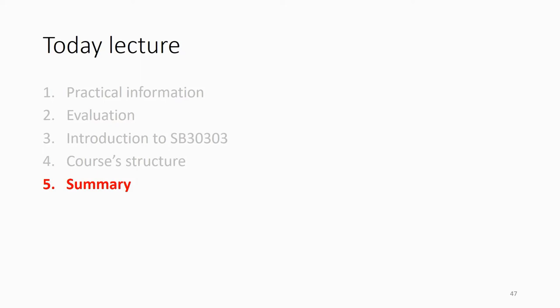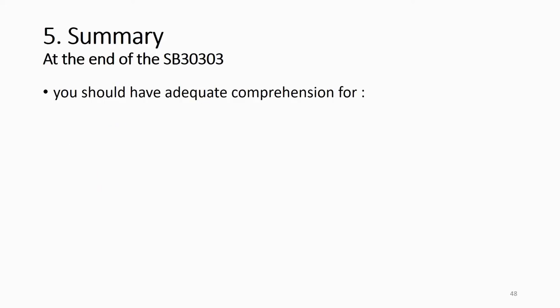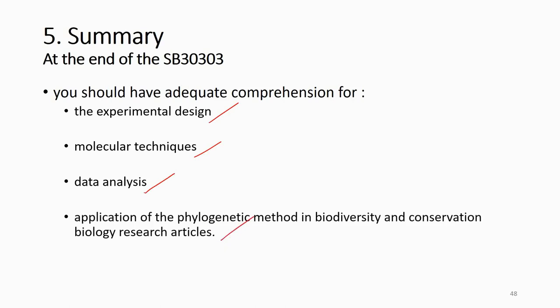To summarize, at the end of the course you should have adequate comprehension and skill for experimental design. First you have a research question, a problem, an issue related to conservation. If the problem is related to genetics, then you should know which technique, which tools you have to use, which part of the genome you have to study. After you get the sequence you should also know how to do the data analysis according to your objective and research questions, and then know how to apply it to solve biodiversity and conservation problems.